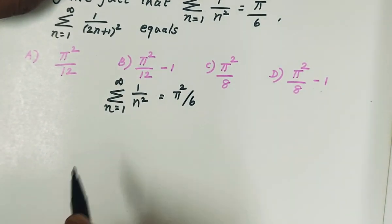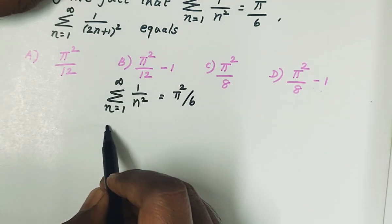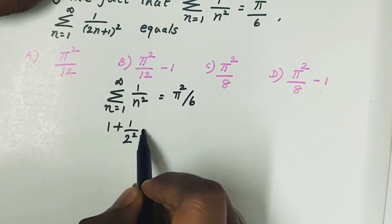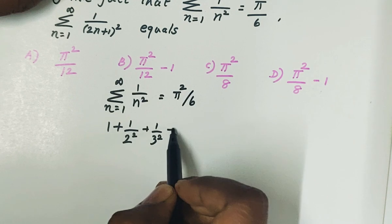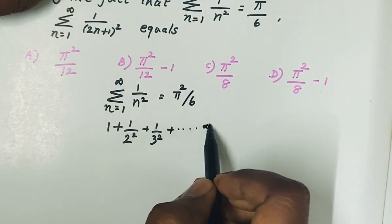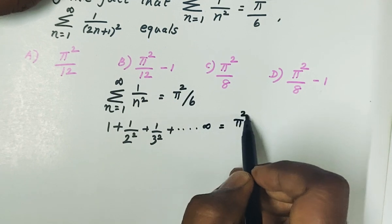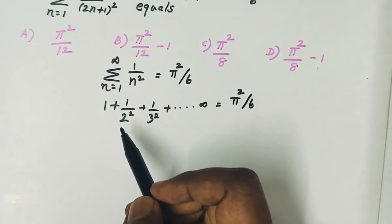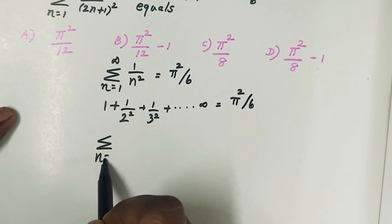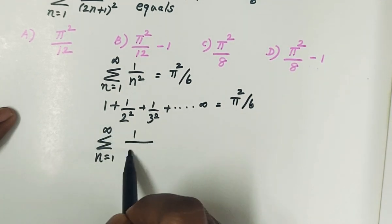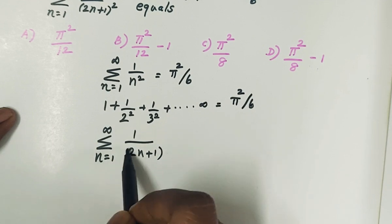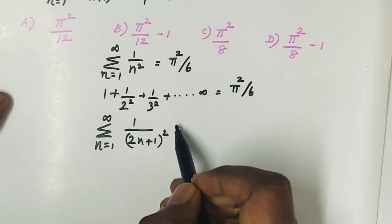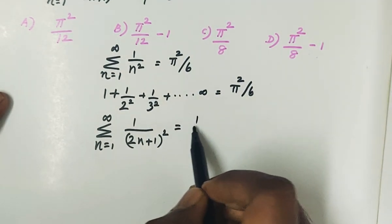So for n equal to 1, 2, 3... the series 1 by n square gives us: 1 by 1 square, plus 1 by 2 square, plus 1 by 3 square, and so on up to infinity. So summation n equal to 1 to infinity, 1 by 2n plus 1 whole square is what we want to find.